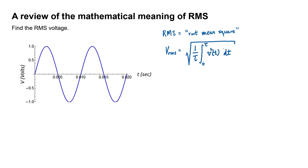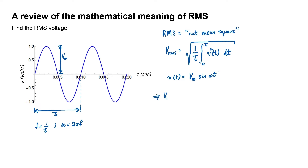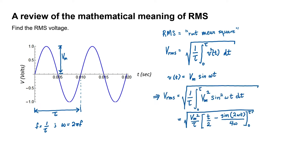We have here a plot of voltage versus time, so we have all the information we need to find the RMS voltage. Calling the period tau, we know that frequency is the inverse of the period, and angular frequency is 2 pi times the frequency. If we call the amplitude of this sine wave V sub m, then we can write V(t) as Vm times sine of omega t. Substituting this into our equation for RMS voltage, it turns out that evaluating sine of 2 omega t at both endpoints gives zero. We've recovered the familiar formula: the RMS voltage of a sinusoid is just the amplitude divided by the square root of 2.